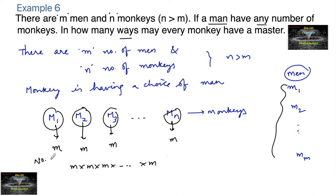So the required number of ways is equal to m times m times m, and so on - how many times? n times. Which is equal to m to the power of n. So m power n is the answer.